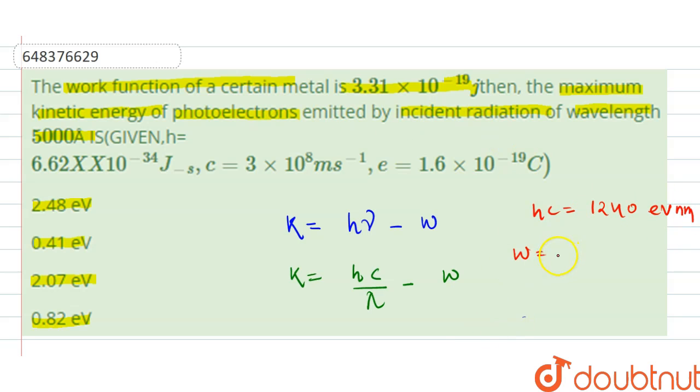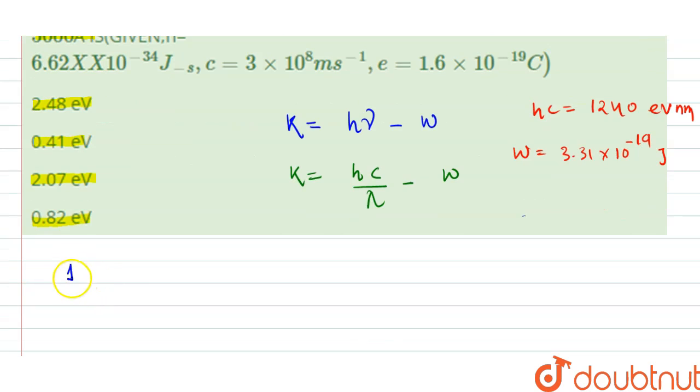1 eV = 1.6 × 10^-19 joules. So from here, we can get the work function in electron volts, that is 3.31 × 10^-19 divided by 1.6 × 10^-19.